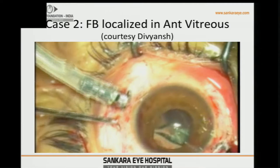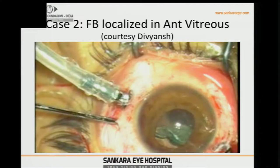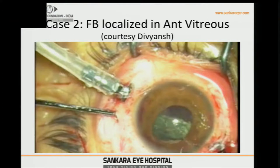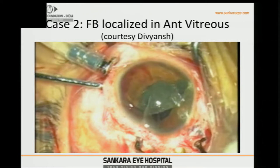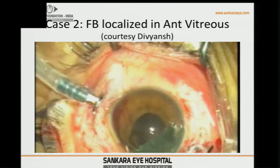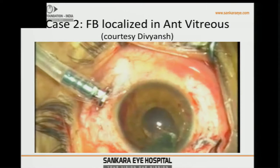Once free, the scleral tunnel port was enlarged and a long-pronged microforceps was used to retrieve it, tilting it into the anterior chamber and removing it. The posterior macula and retina should be well-guarded with PFCL or a vitreous cushion even before PVD induction, in case the foreign body slips and drops behind — we have had instances of multiple slippages causing additional trauma.